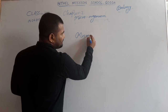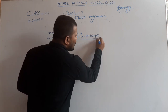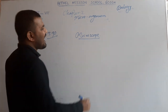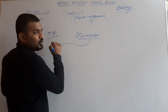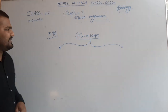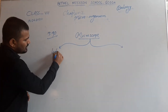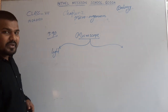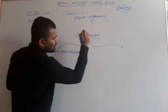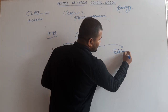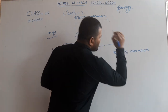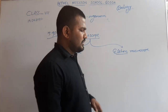A microscope is the instrument which helps to observe microorganisms. These microscopes are of two types on the basis of the film media. The first one is the light microscope, where the film media is light. And the second one is the electron microscope, where the film media is electron rays.